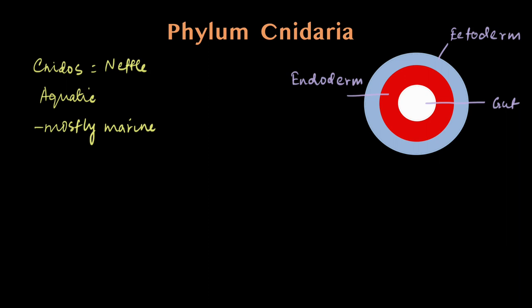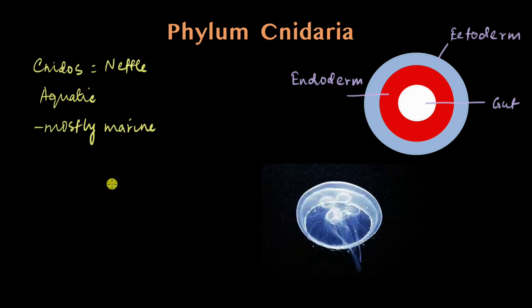This is also the first phylum to have some sort of body symmetry. If you look at this jellyfish and cut it with a plane in the middle—this looks like a line, but if you imagine it three-dimensionally it'll be a plane—it cuts into two equal halves. There can be another plane like this, another like this. You can imagine an infinite number of such planes which can cut the animal body into two equal halves.